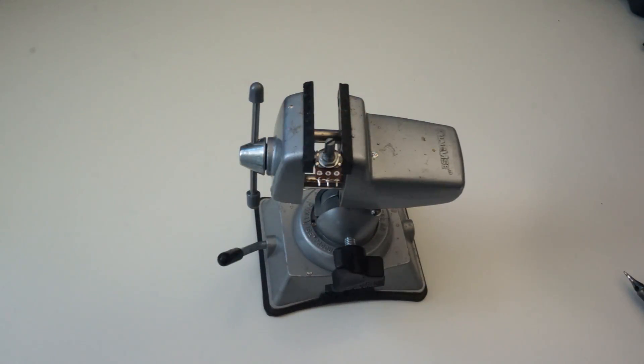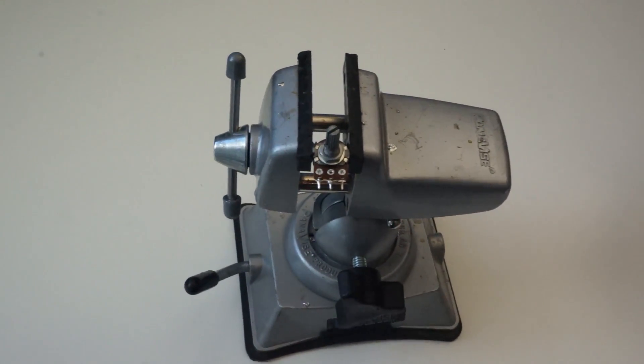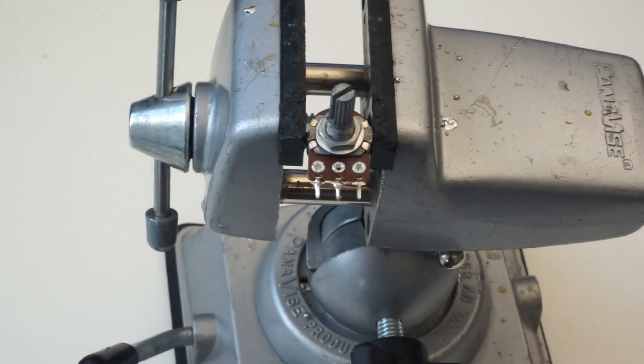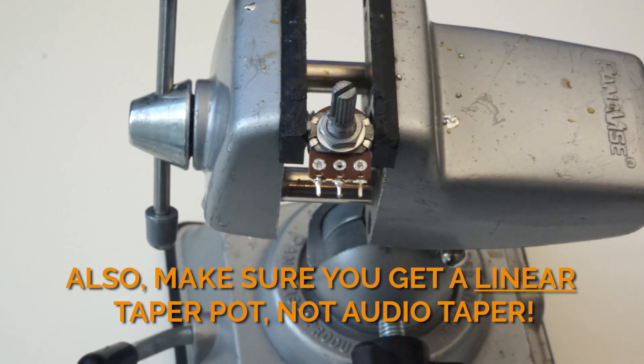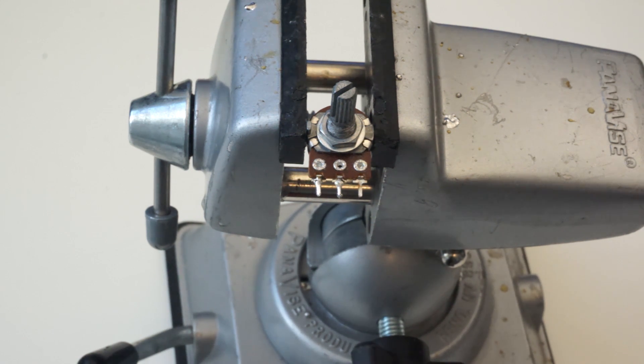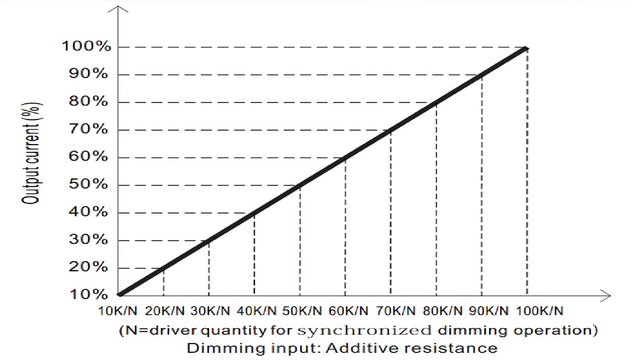Before you pick up your potentiometer, you need to figure out what range of resistance you need on it. That's really only determined by one thing: how many drivers you're trying to dim at once with this potentiometer. If you're just trying to dim a single driver, which is probably the case for 90% of people, it's very simple. If you're looking to dim two or three drivers at the same time with a single pot, there's a formula you need to follow to determine what resistance that potentiometer needs to be.